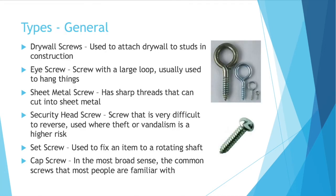So we've defined a few ways to describe screws, but what are the different types? Here are a few general types: drywall screws, used to attach drywall to studs in construction; eye screws, screws with a large loop usually used to hang things; sheet metal screws, which have sharp threads that can cut through metal; security head screws, which are very difficult to reverse and typically used where theft or vandalism is a higher risk; set screws, used to fix an item to a rotating shaft; and in the most broad sense, a cap screw — these are the common ones most people are familiar with. There are very broad general families of screws, and screws have all sorts of purposes.